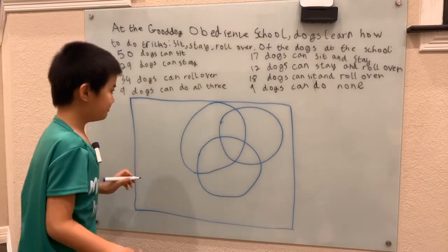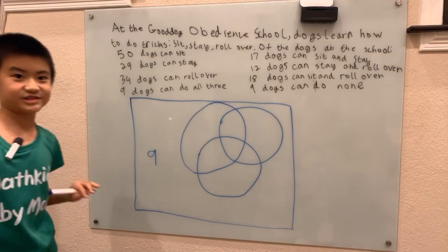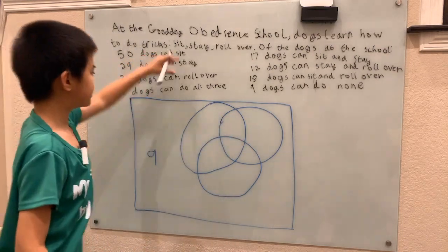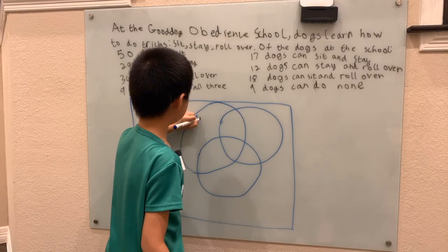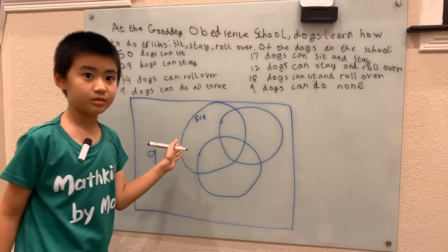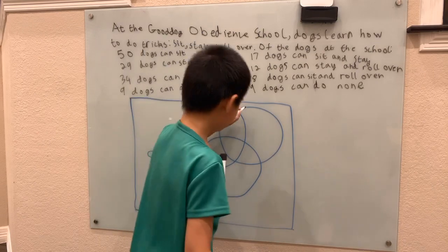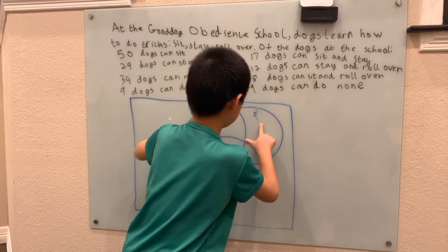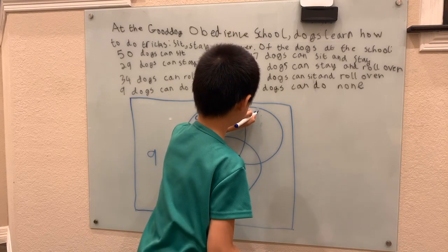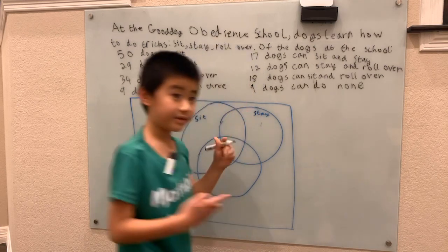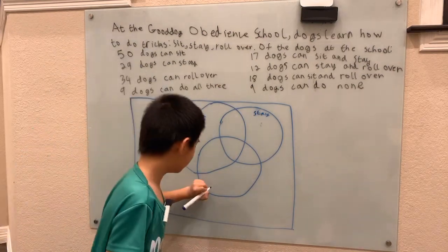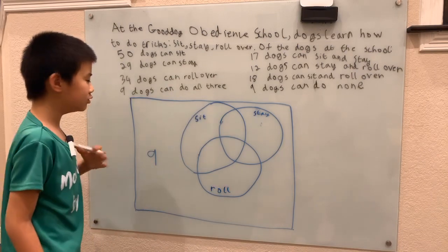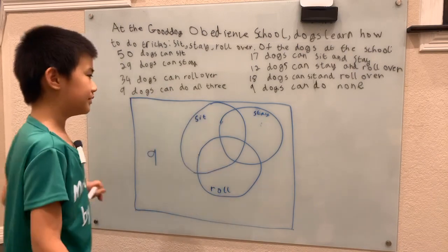The 9 dogs that can do none — that's pretty easy, these dogs are the outsiders. For the insides, we first have to label these. Sit will be here, stay will be here, and then we have roll over.